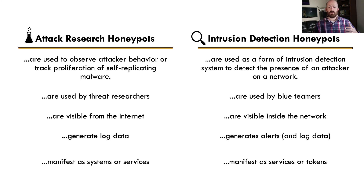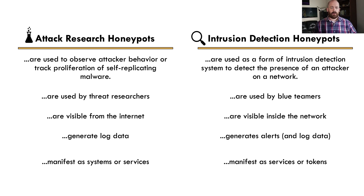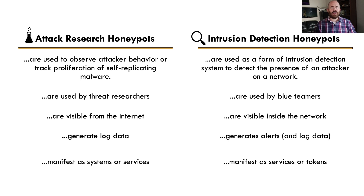There are a couple of main characteristics that really differentiate an IDH from other forms of honeypot. One is that they are almost always placed inside the network — the idea being that an attacker who has already compromised your network will stumble across one. Just because an attacker has a foothold on your network does not mean they have won. They haven't really won until there's a breach — until they've stolen something or caused service disruption. So we still want to aggressively detect them. These generate alerts and log data and can manifest as services or tokens.